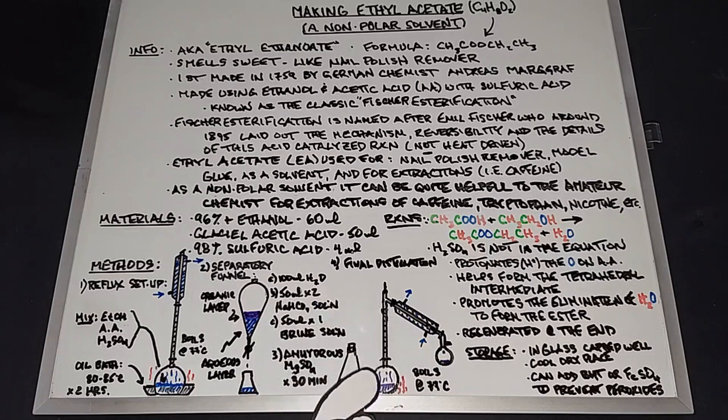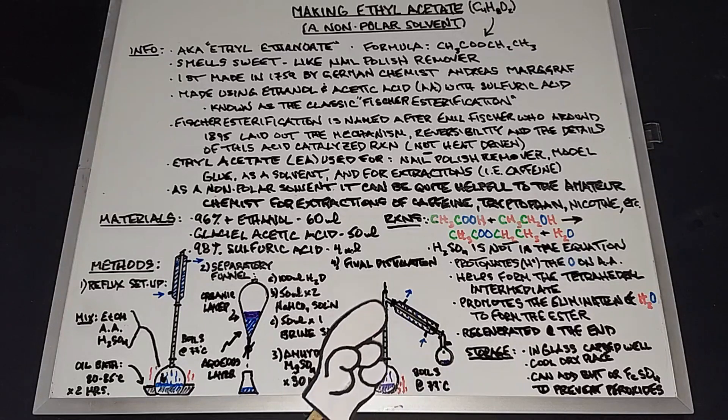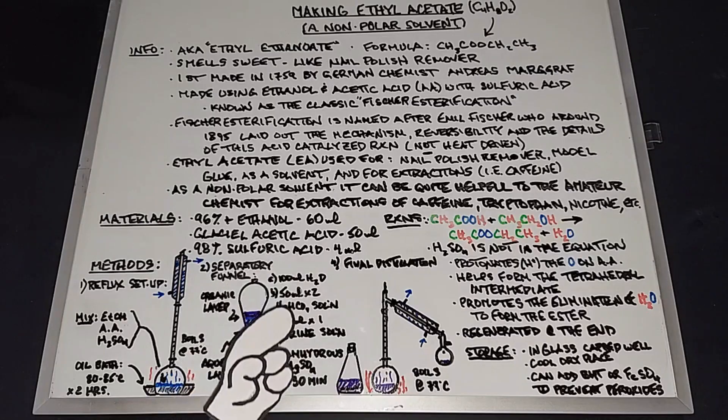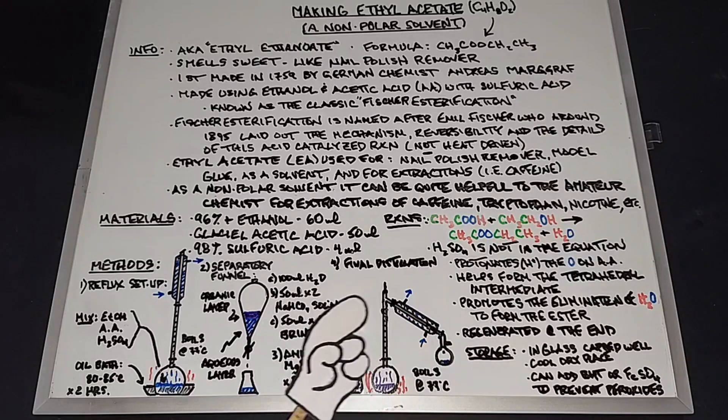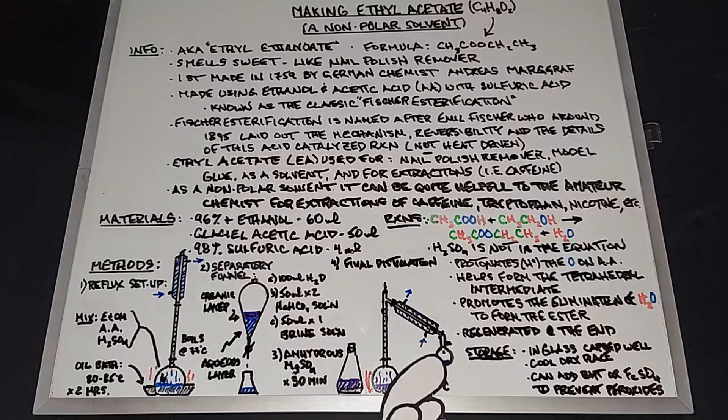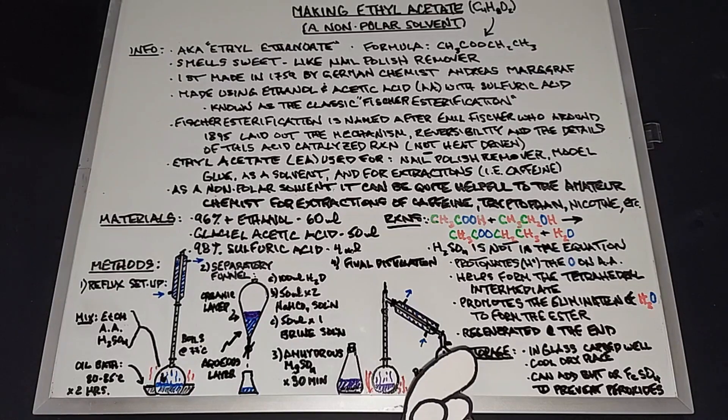Then we're going to pour the ethyl acetate into a round bottom flask and perform a regular fractional distillation. It'll boil at 77 degrees like before. What it will leave behind are any of these things: the sodium bicarb or salt, or even some of the mag sulfate that might've snuck through. Plus hopefully any water that might be left. When we fractionally distill this, what we'll get is some really pretty pure ethyl acetate.